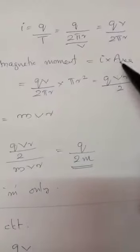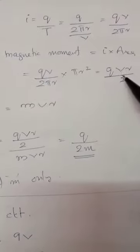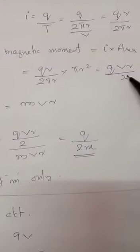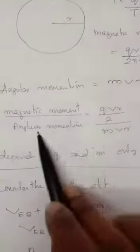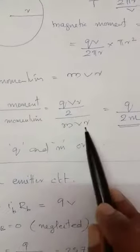Magnetic moment equals current into area. Area is πr². In the πr, qvr by 2. Angular momentum of a circulating particle is mvr. Therefore, magnetic moment by angular moment equals qvr by 2 divided by mvr.